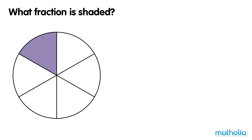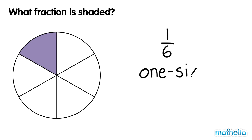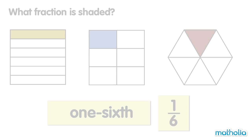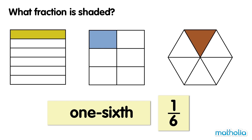What fraction is shaded? The circle is divided into six equal parts. One part is shaded. One sixth of the circle is shaded. One sixth is shaded.